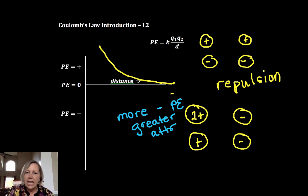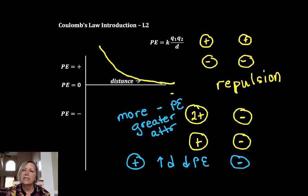So now if I compared plus one to minus one, plus one out here compared to the minus is less negative. Because I've increased the distance, I decrease that value of the potential energy. And it's less attracted.